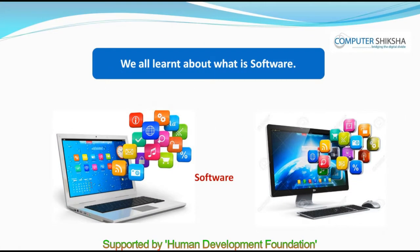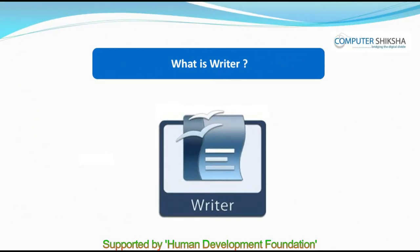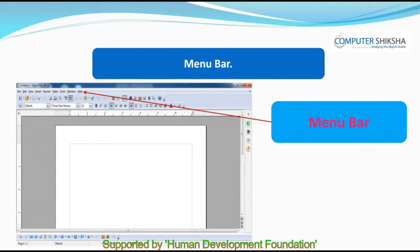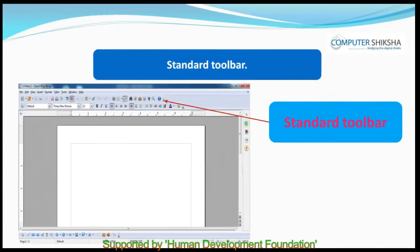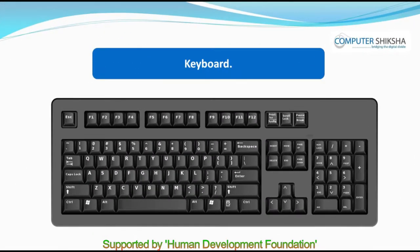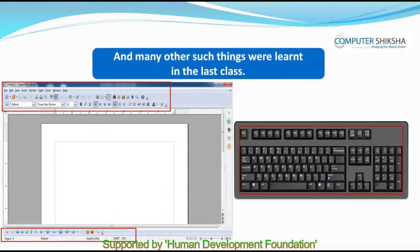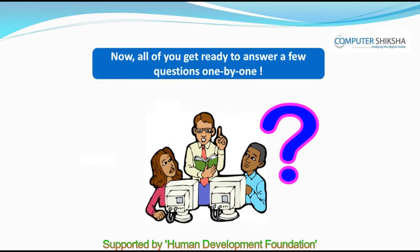We all learned about what is software, what are the differences between OpenOffice and MS Office, what is Writer, and we also learned about Title Bar, Menu Bar, Formatting Bar, and Standard Toolbar. Then we learned about the keyboard and how we use it, how we type on the Writer page, and many other such things were learned in the last class. Now, all of you get ready to answer a few questions one by one.